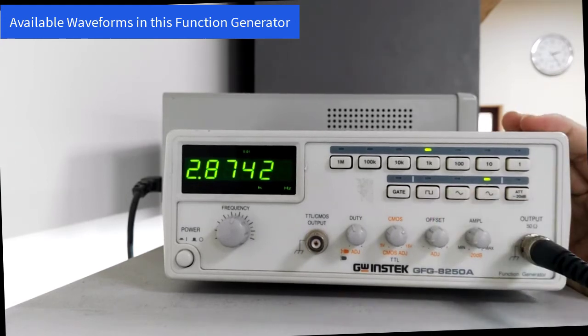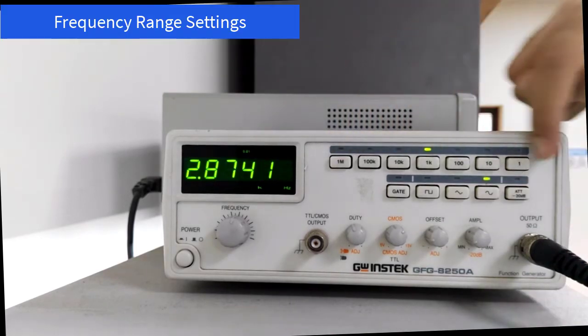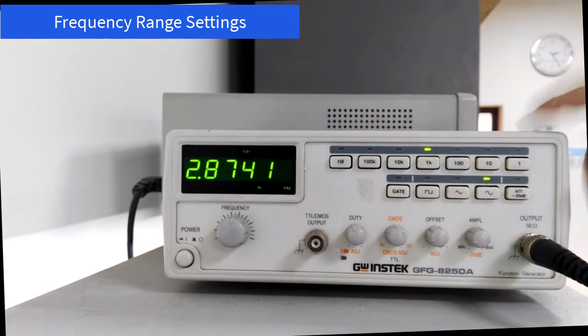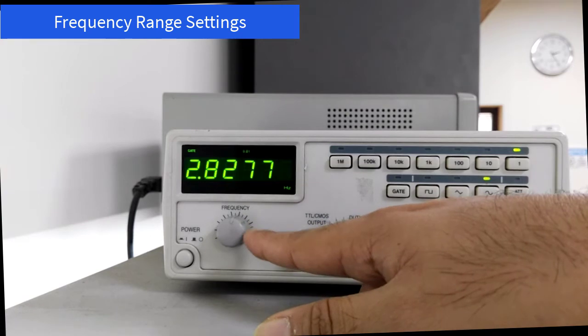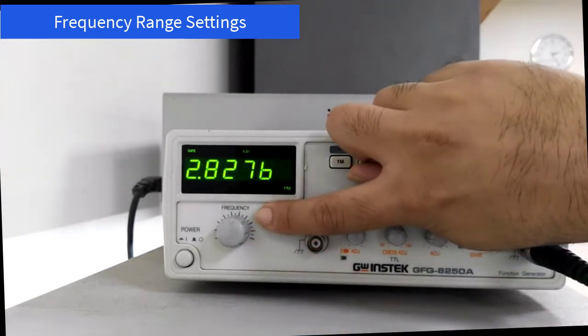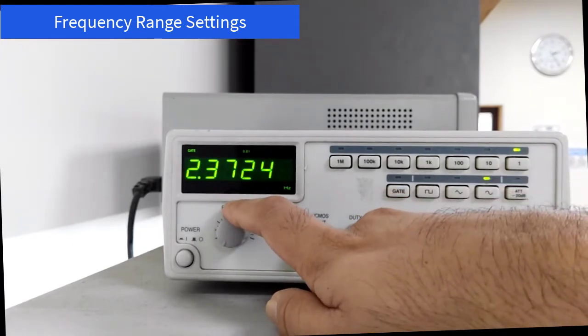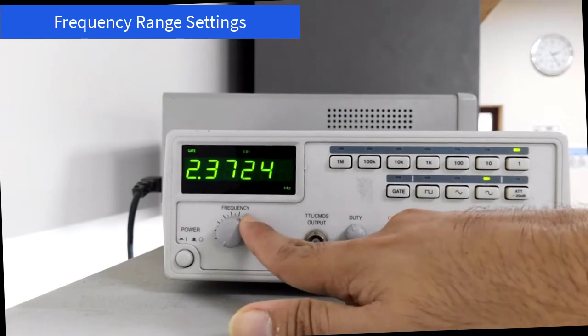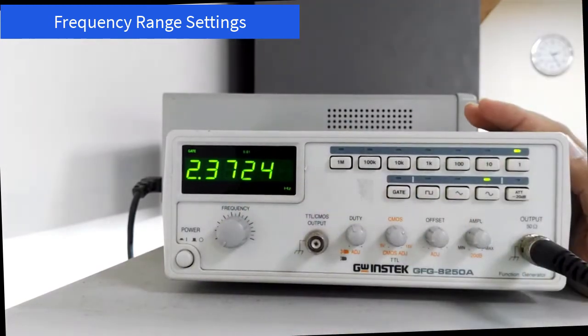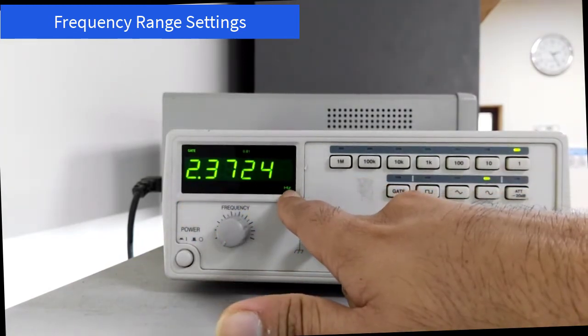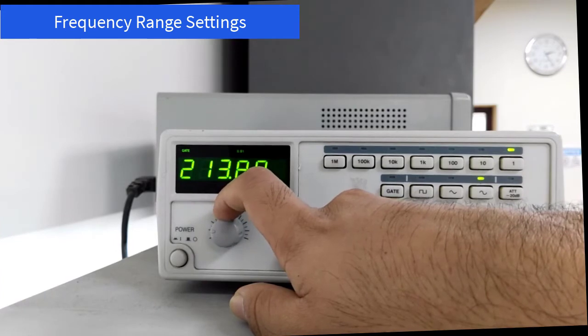This panel here is used for frequency ranging. If you press this one here, it will light up and you will use this knob to adjust the frequency. You will notice that this knob is labeled frequency. When you rotate this knob, the frequency will be adjusted. Currently, this is the lowest frequency that is supplied by this function generator: 2.3724 hertz.